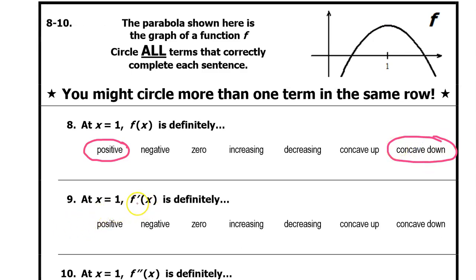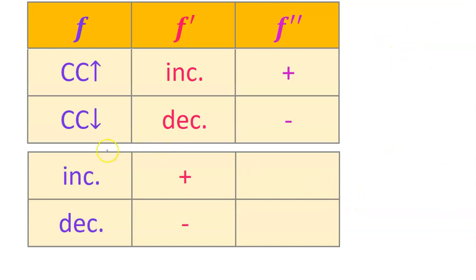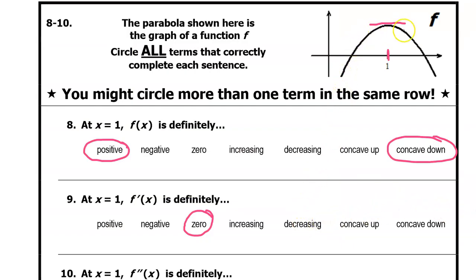Number 9: now we're talking about f prime at x equals 1. Remember that f prime is the slope. Is the slope at x equals 1 positive, negative, or zero? This is a horizontal tangent line, so the slope is zero. Is the slope increasing or decreasing? If f is concave up, then f prime is increasing. If f is concave down, then f prime is decreasing. Since f is concave down, f prime is decreasing. We don't know whether f prime is concave up or down, so we won't circle those.